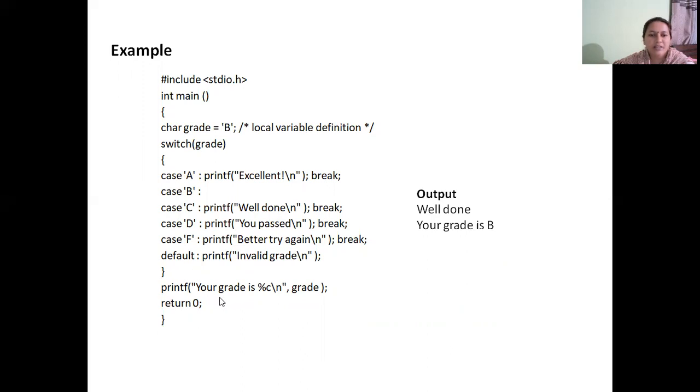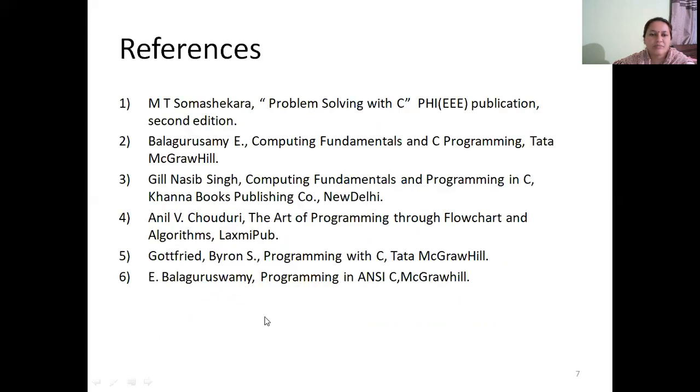And then the next output statement, which is outside the switch statement, your grade is percentage C grade variable. That is, your grade is B will be displayed. This is how the switch statement works. Thank you.